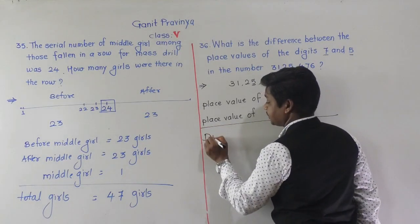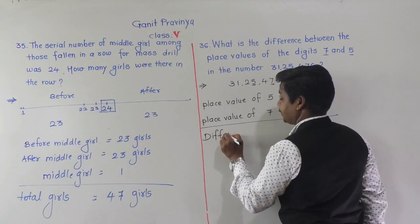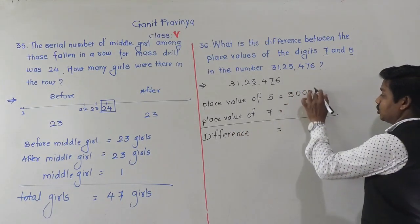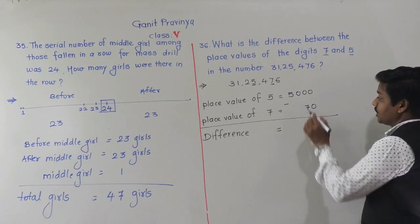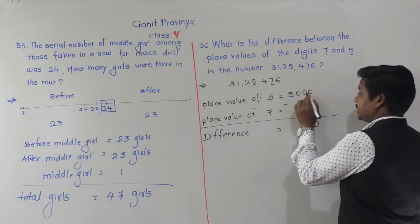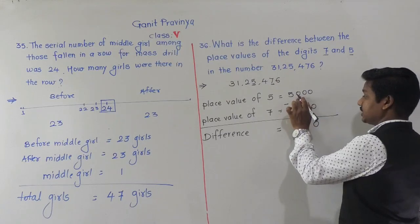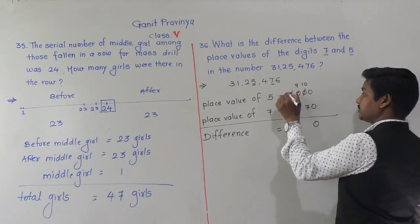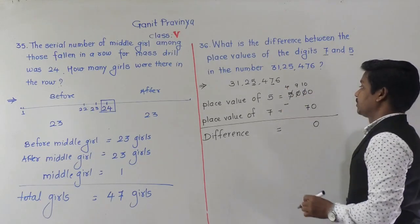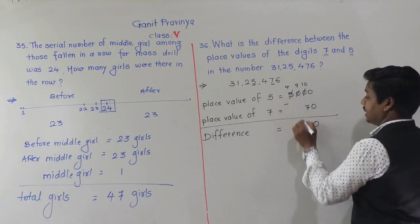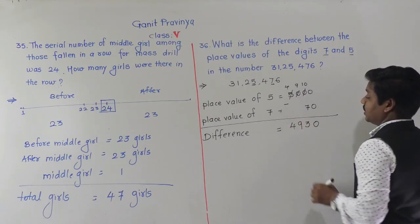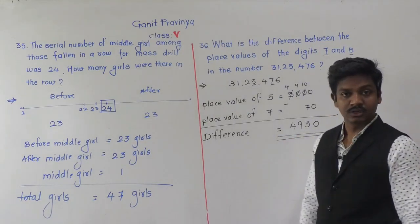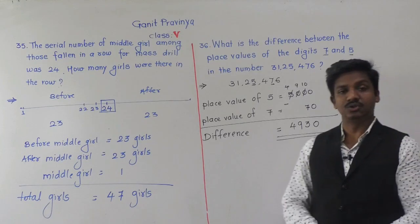Finding the difference: 5,000 minus 70. Working through the subtraction with borrowing, the difference is 4,930. So 4,930 is our answer. Pause this video and write this down in your notebook.